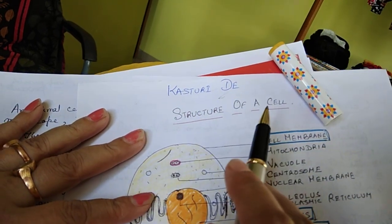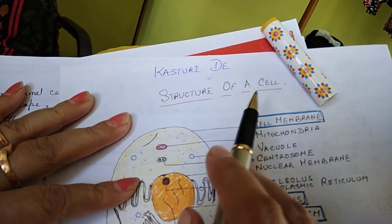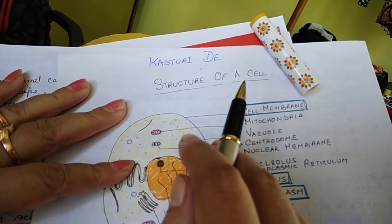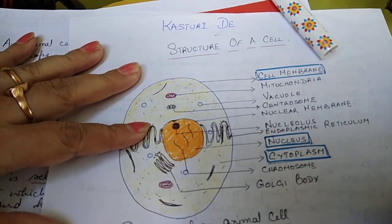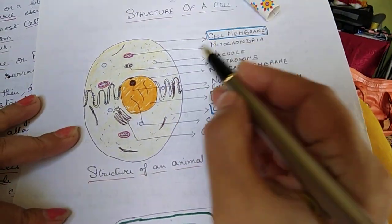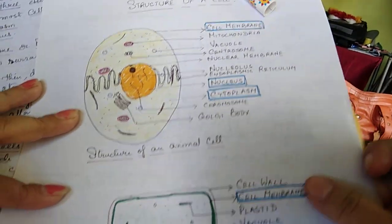Good morning, this is Kasturi speaking on the structure of a cell. It's a continuation of the cell chapter according to class 6 syllabus ICSE. This is the structure of an animal cell and this is the structure of a plant cell.